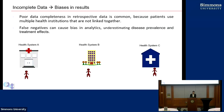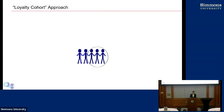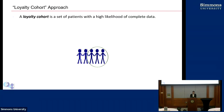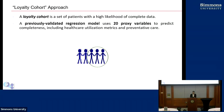A person might go to health system A for specialty care and health system C for primary care, and they were hospitalized once in health system B. Any one of those institutions doing a research study on that patient's data won't have a perfect picture of what that patient's treatments and conditions are. The method of choosing a better cohort is called a loyalty cohort — it's a set of patients that is likely to have higher data completeness. One way of determining this is patients that have had three visits over the last three years or something like that.